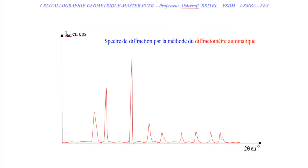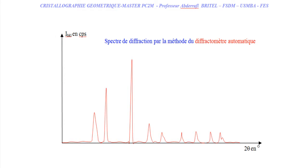The method that gives access to 2θ is the automatic diffractometer method. The advantage of this method and the Guignet method is that they allow determination of diffraction angles with great precision. The automatic diffractometer also has the additional advantage of giving access to the intensities of diffraction peaks, enabling quantitative analysis. For more details on these three techniques, see the dedicated videos.